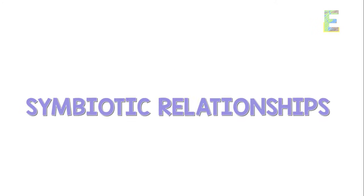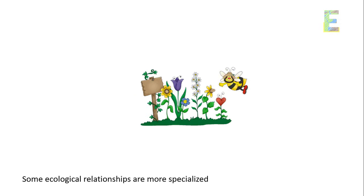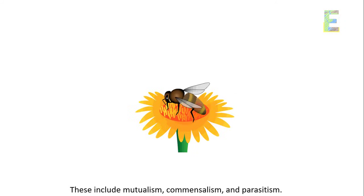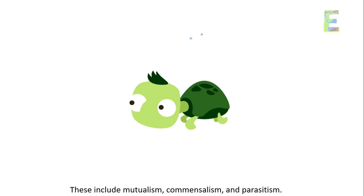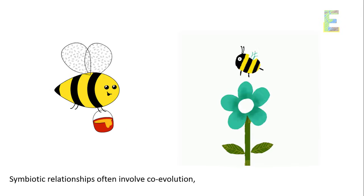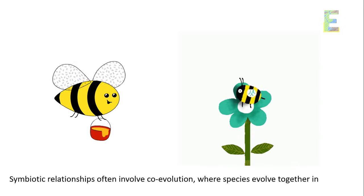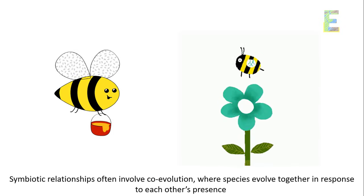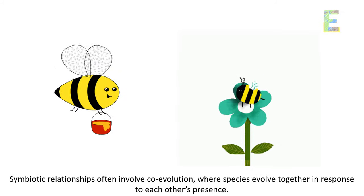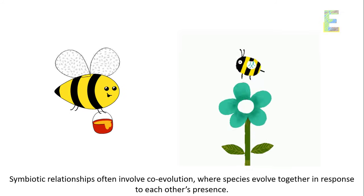Some ecological relationships are more specialized and long-term, leading to symbiotic relationships. These include mutualism, commensalism, and parasitism. Symbiotic relationships often involve co-evolution, where species evolve together in response to each other's presence.